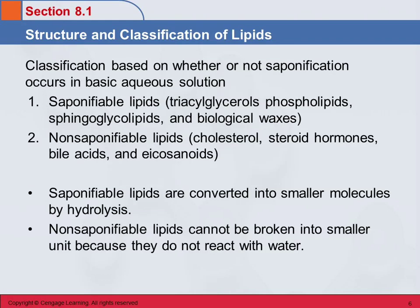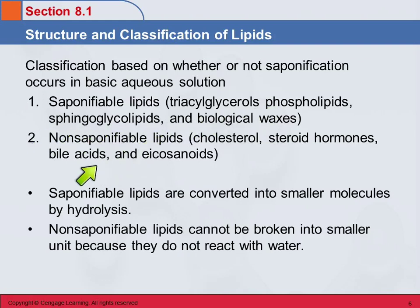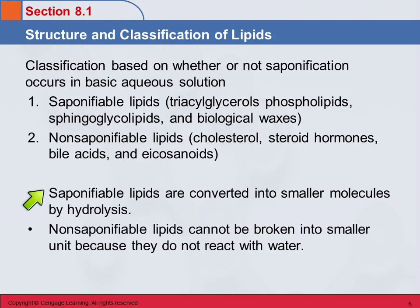The classification based on saponification is simply: does saponification occur or not? Saponifiable lipids are the triacylglycerols, the phospholipids, the sphingoglycolipids, and the biological waxes. The non-saponifiable lipids are cholesterol, steroid hormones, bile acids, and eicosanoids. The saponifiable ones will be broken down into smaller molecules by hydrolysis, while the others do not react with water, even under basic conditions.